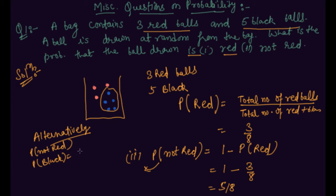So there are how many black balls in the bag? These are 5 black balls and total number of balls are 8. So the probability of getting not red is 5 by 8.